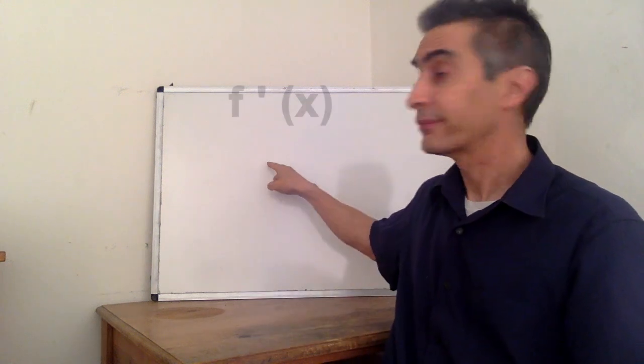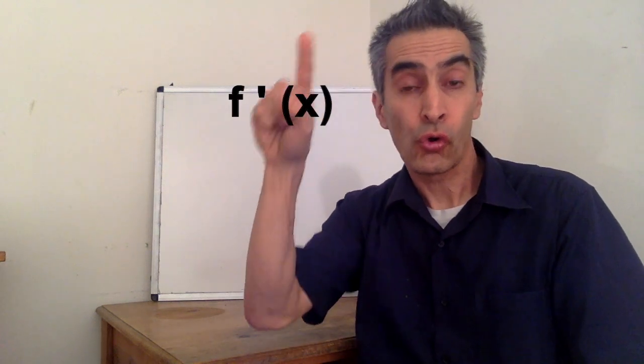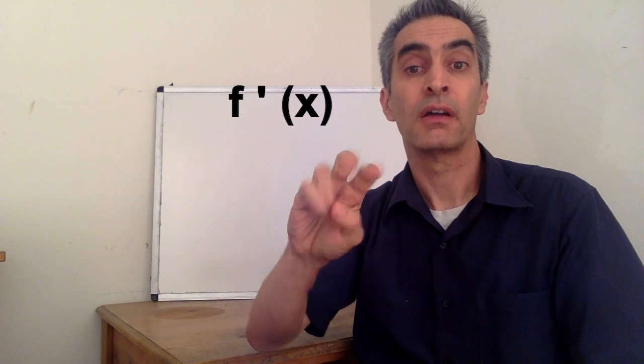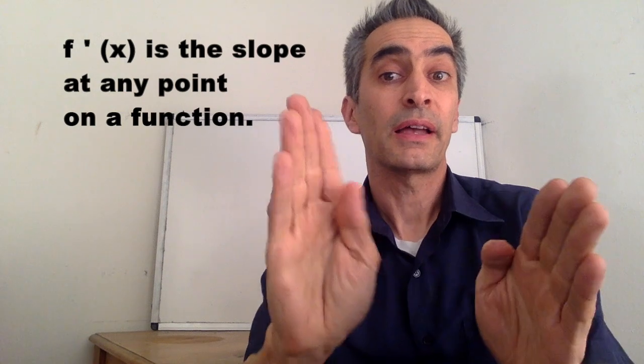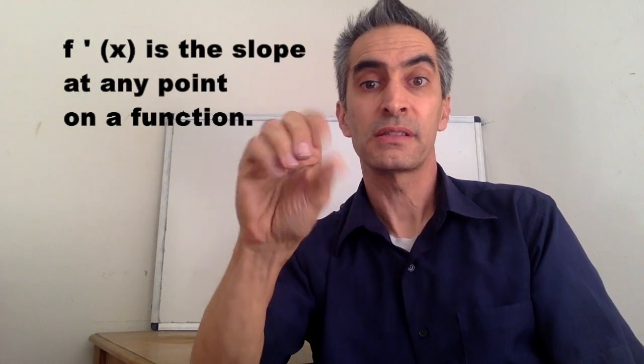I sign f prime of x for derivative. We know the Power Rule allows us to calculate f prime of x. But what's f prime of x? f prime of x allows us to calculate the slope of any point on the line. It doesn't matter where it is.